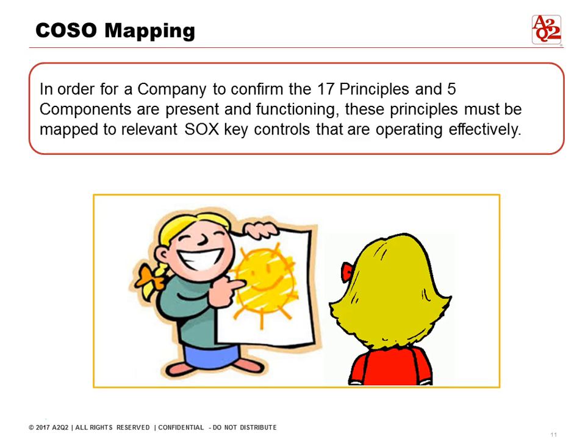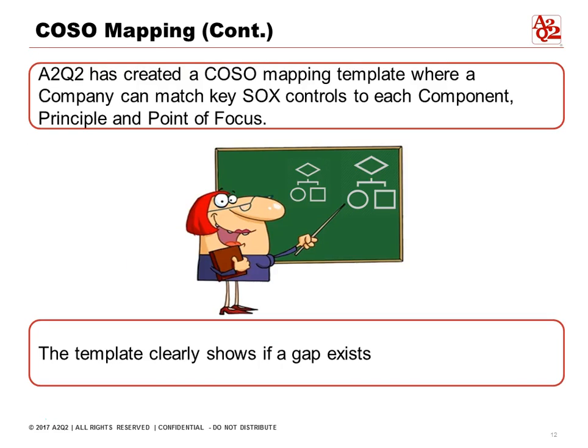In order for a company to confirm that it's met the 17 principles and the five components that are present and functioning, these principles have to be mapped to the relevant SOC's key controls that are operating effectively. We've created the template to match each of these controls to the components, and the template clearly shows how to see the gaps if they exist.